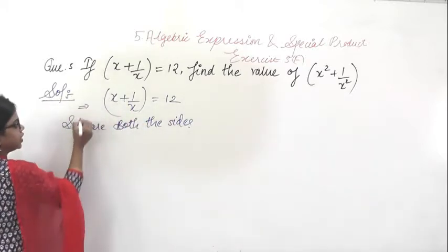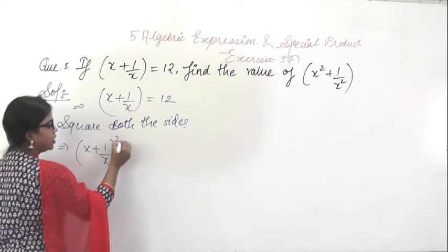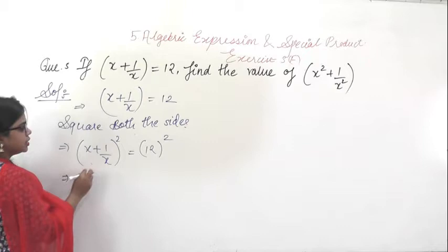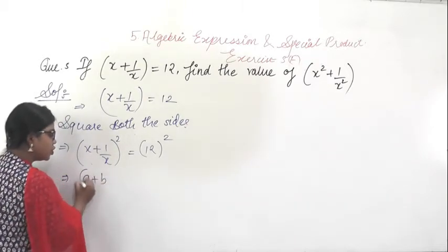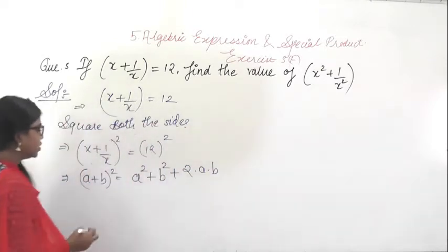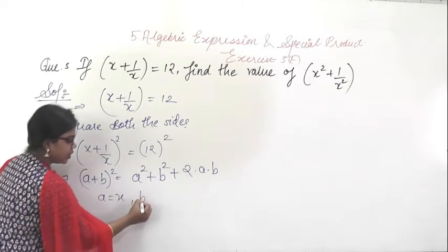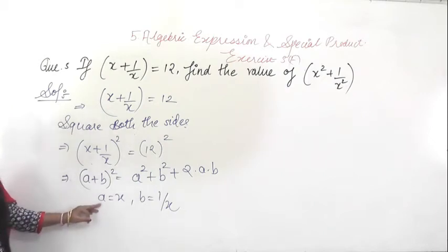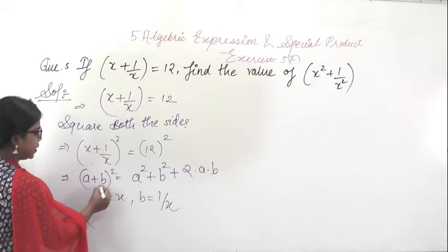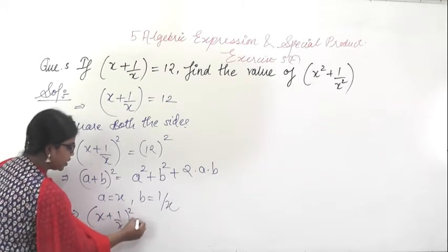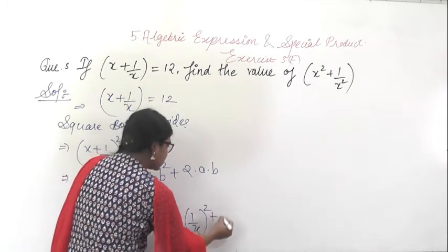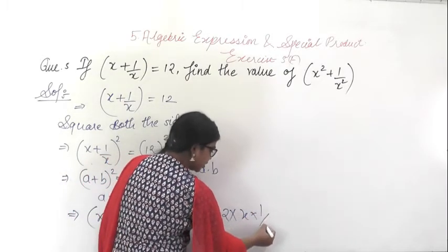On squaring both sides you will get (x + 1/x)² = 12². Now this is in the form of (a + b)². The formula for (a + b)² is a² + b² + 2ab. Here a = x and b = 1/x. Substituting, (x + 1/x)² expands to x² + 1/x² + 2 × x × (1/x).